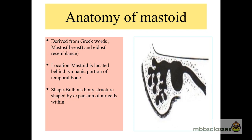Mastoid is a part of the middle ear cleft. The term mastoid is derived from two Greek words: mastis, which means breast, and aereus, which means resemblance. So as it resembles a little bit of the breast, it got its nomenclature. It is located behind the tympanic portion of the temporal bone.